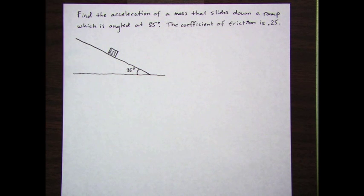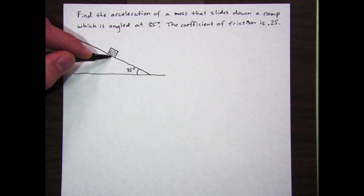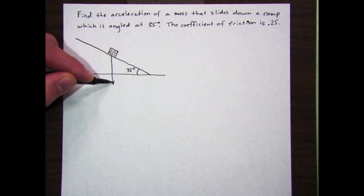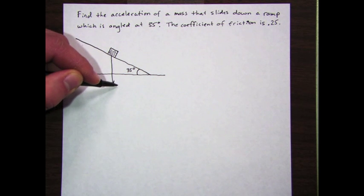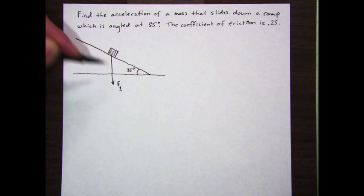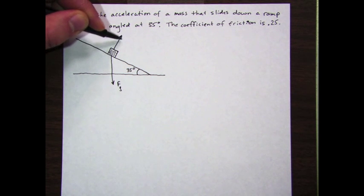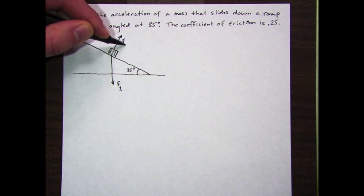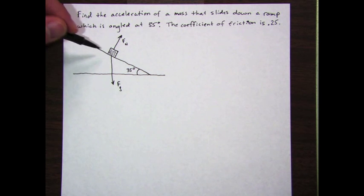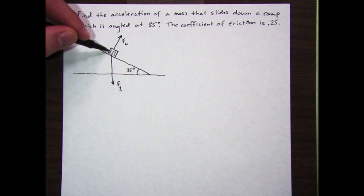The first thing I want to do is just diagram the forces. What forces do I have? I start out, I've got gravity going down to the center of the earth, f sub g. I have the normal force perpendicular to the surface, f sub n. And my third force is kinetic friction going backwards, f sub k.